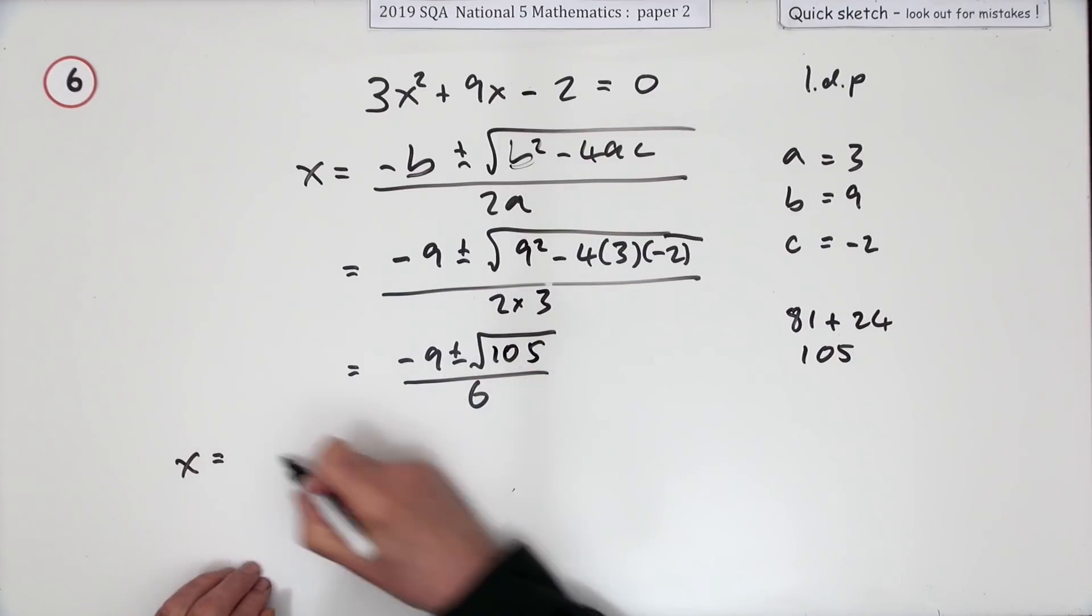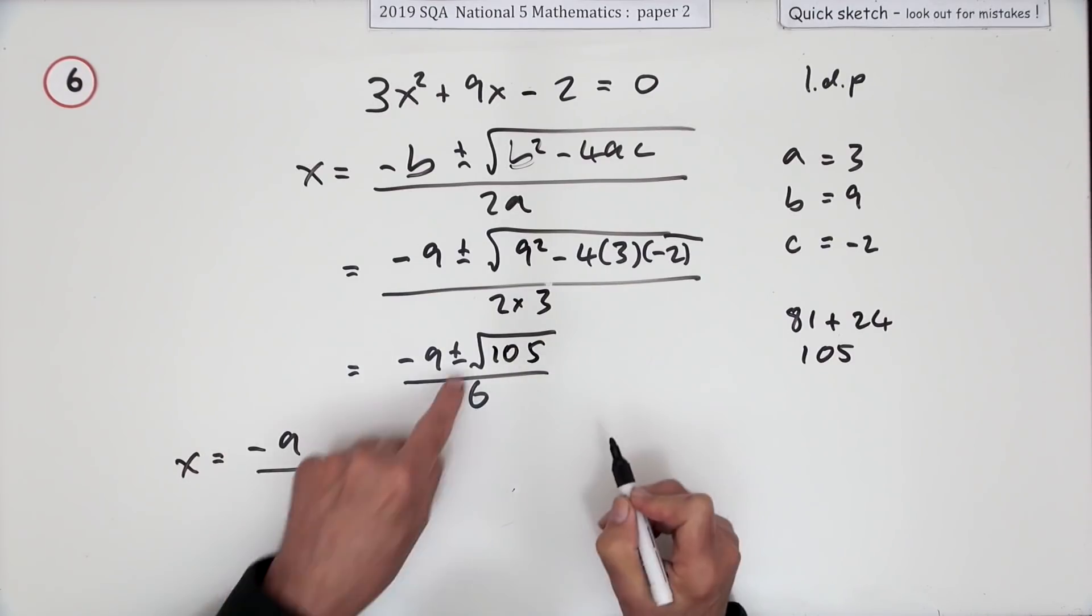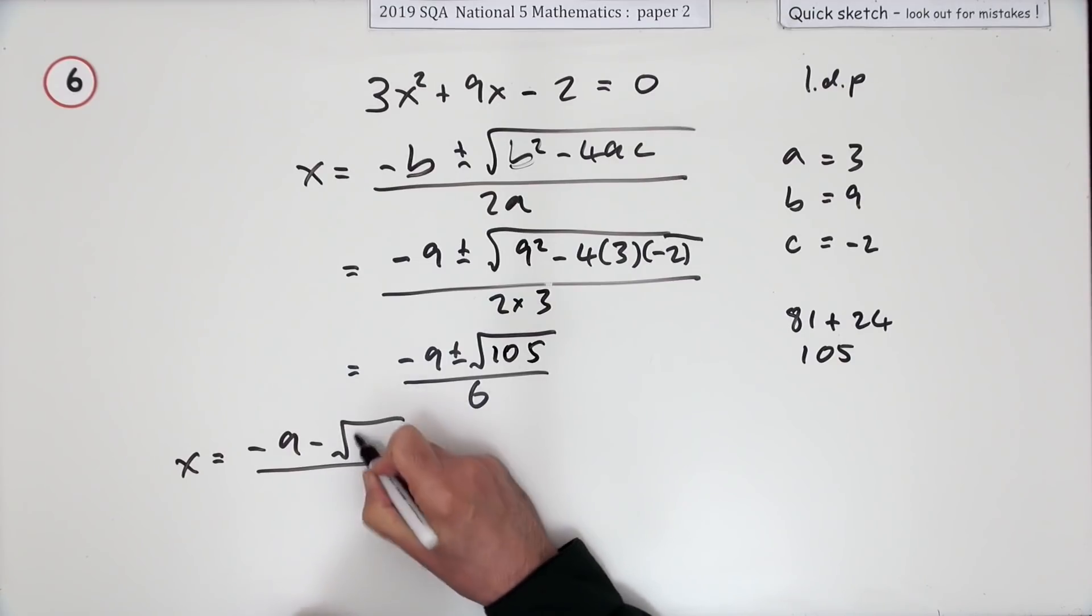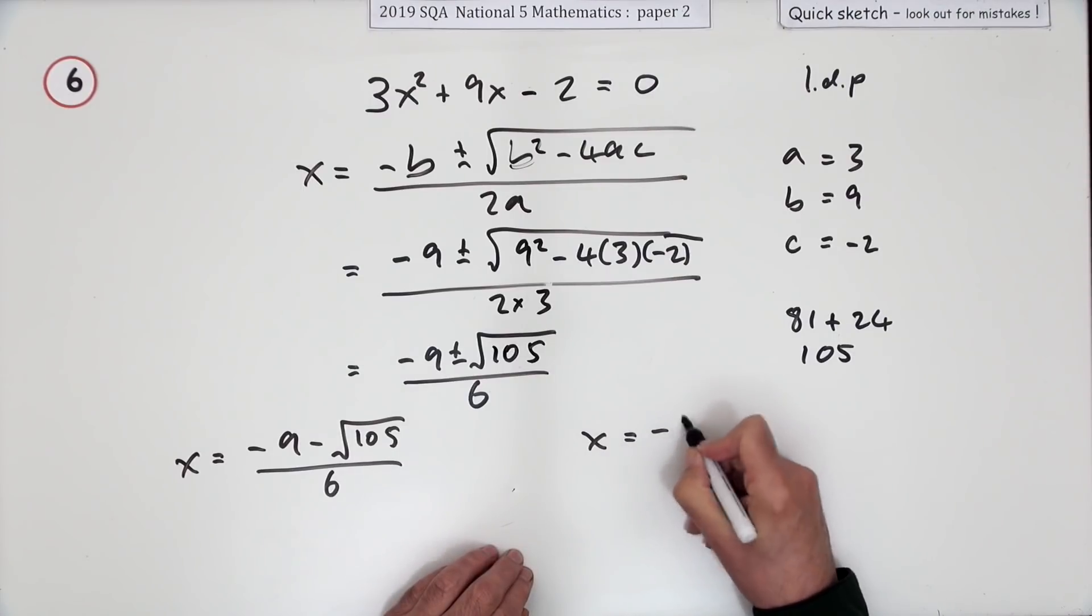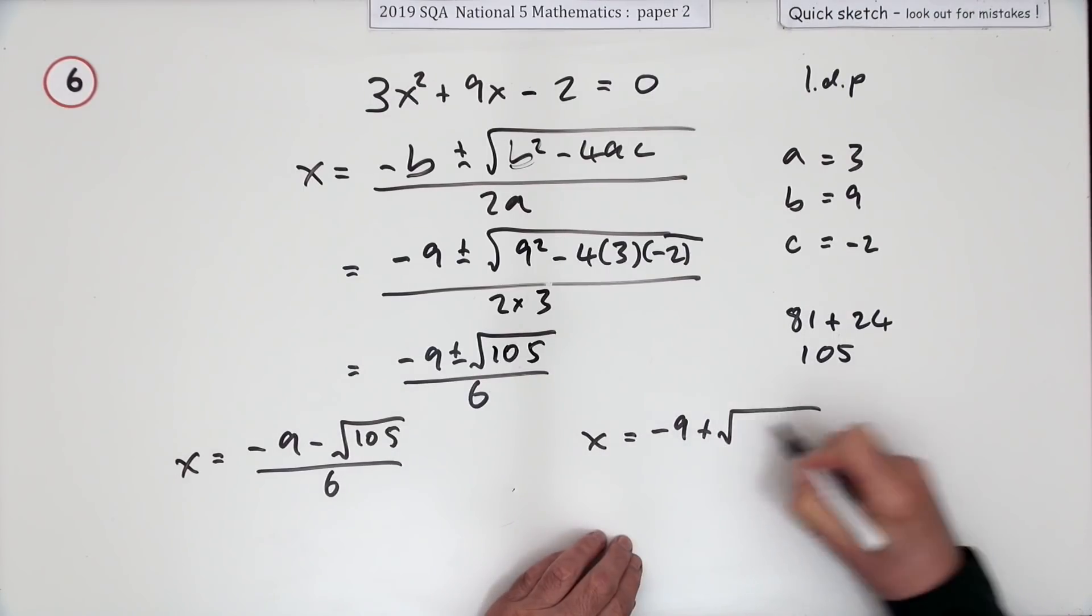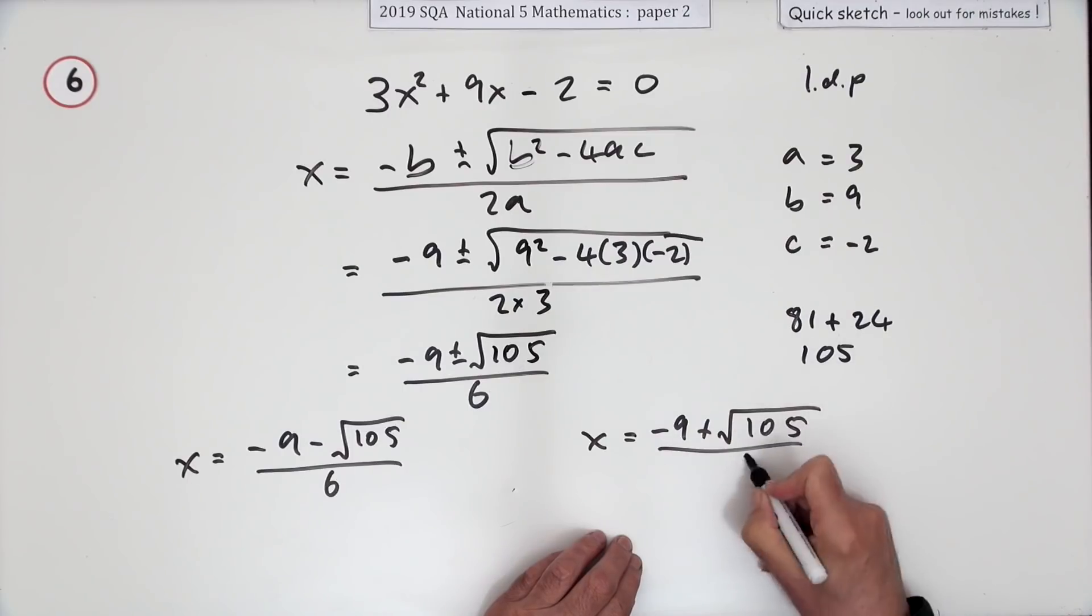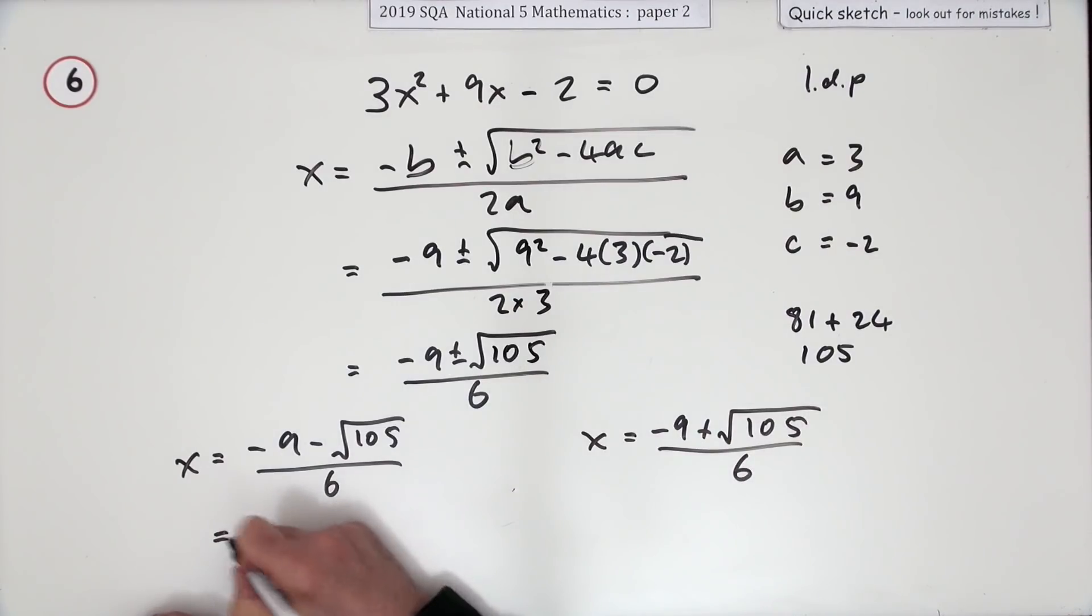Whereupon you get the two answers. There'll be negative 9—now I'm going to do this subtract first just so I get the lower one first, so I've got them in order—negative 9 minus the square root of 105 all over 6. And the other one's going to be negative 9 plus the square root of 105 all over 6. Work them out in any order you like.